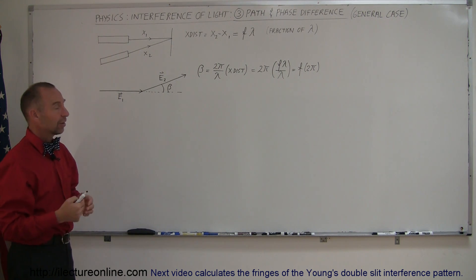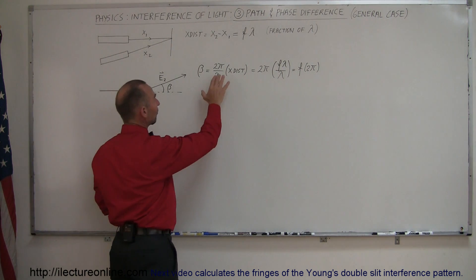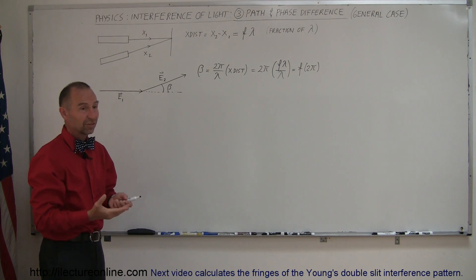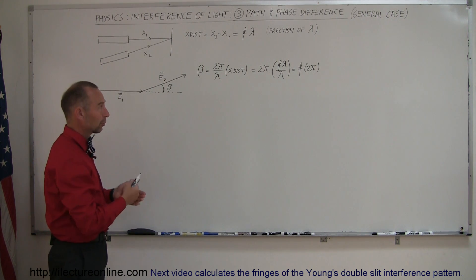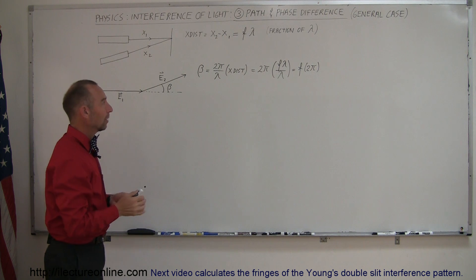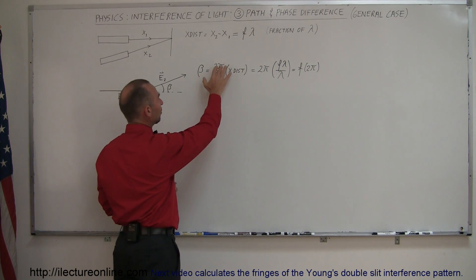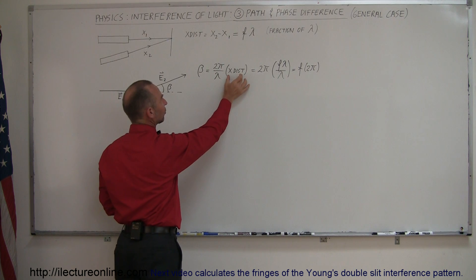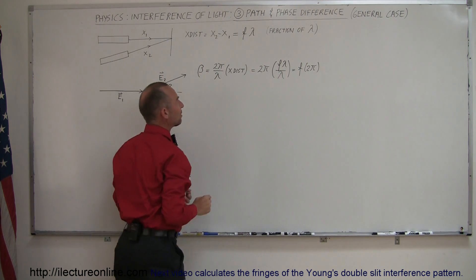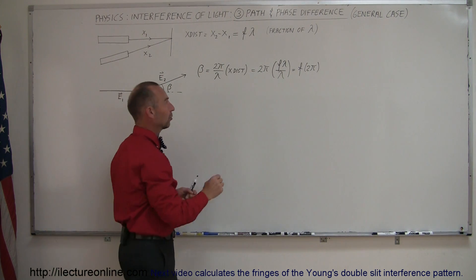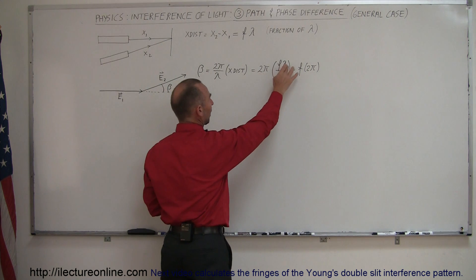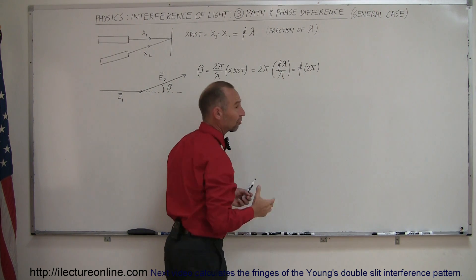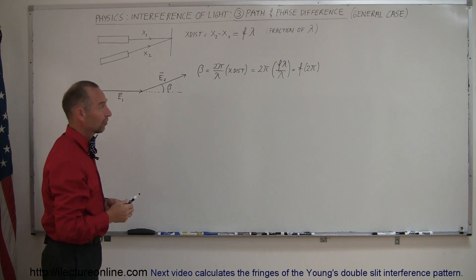The phase difference beta is going to be equal to some fraction of 2π, somewhere between 0 and 2π (or 0 and 360°), though we prefer radians. To find that fraction, we take 2π divided by the wavelength and multiply by the extra distance, which is a fraction of the wavelength. So the fraction of the wavelength divided by the wavelength times 2π gives us the fraction of 2π for the phase difference.